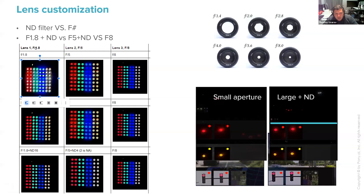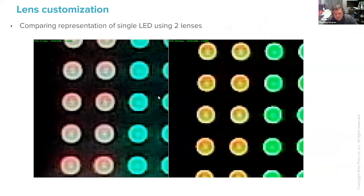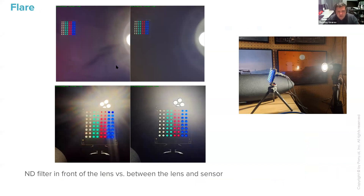Surprisingly, we found that a smaller aperture lens combined with an ND filter works better in terms of halos and LED reproduction. Here is a comparison of two lenses showing single LEDs at very bright and large scale. The second test we do when choosing a lens is the flare test — we place a very bright light source behind the LED simulator and see which lens produces less flare at different positions, selecting the one with the least flare.